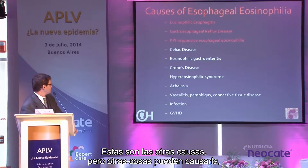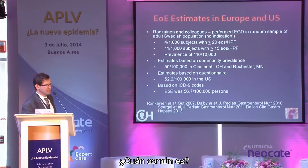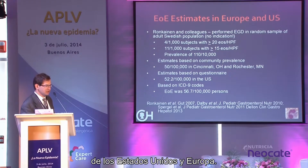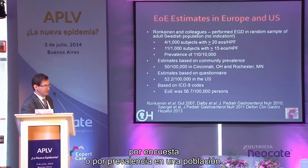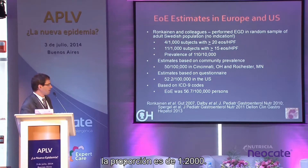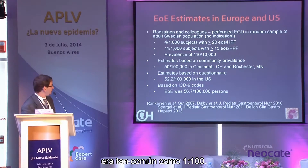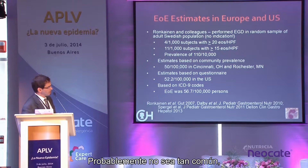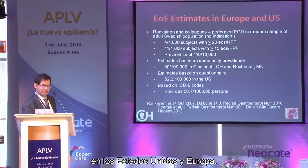Other things can cause esophageal eosinophilia — celiac disease, achalasia, infections, and more. Population studies in the United States and Europe, whether by questionnaire, community prevalence, or ICD-9 coding, put prevalence at about 1 in 2,000. One European study using a random population found it as common as 1 in 100, but they never ruled out reflux, so true prevalence is probably somewhat lower.